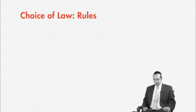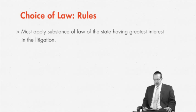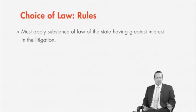First, a bit of background on choice of law rules. Most if not all states have rules that mandate that under certain circumstances the law of another state will govern. So this means, for example, that Georgia state courts will often apply the law of other states. Most typically, the choice of law provisions specify that you should apply the substantive law of the state having the greatest interest in the litigation or the most significant connection to the suit. That's the general rule.